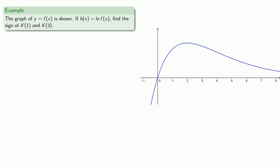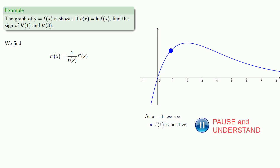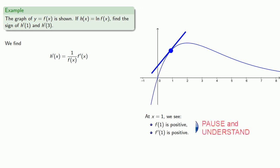We can also consider compositions of functions. Suppose the graph of y equals f of x is shown. If h of x is the log of f of x, we can find the sign of h prime of 1 and h prime of 3. Using the chain rule, h prime of x involves f of x and f prime of x. At x equals 1, f of 1 is positive, and drawing the tangent line shows f prime of 1 is positive. So h prime of 1 is 1 over a positive number times a positive number, meaning h prime of 1 is positive.